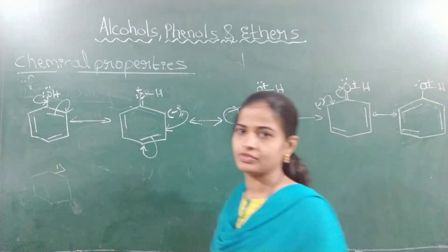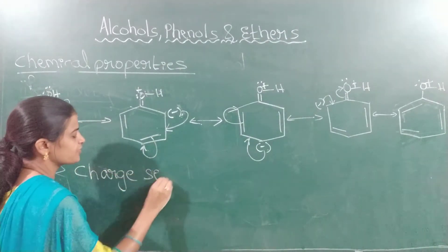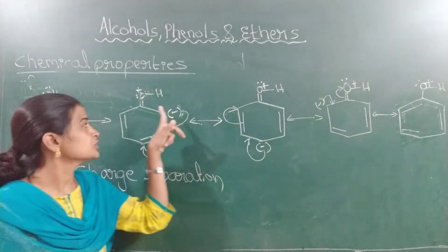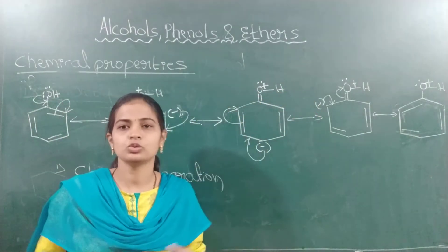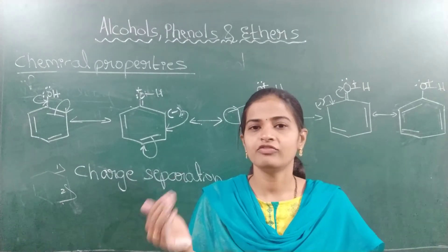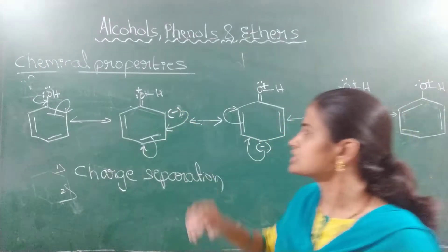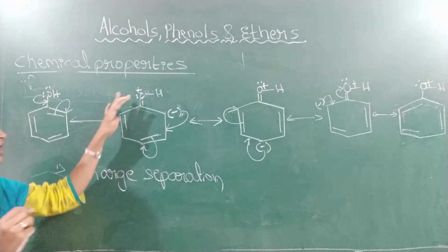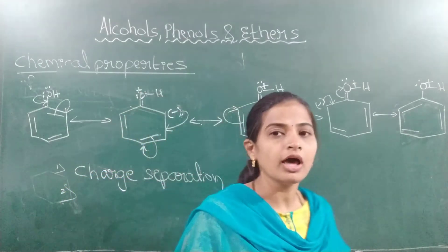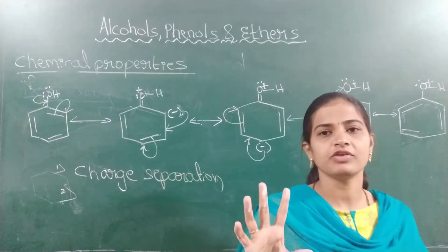There is charge separation in the resonance structures of phenol. Also, the most electronegative oxygen atom is bearing the positive charge. This will destabilize phenol — its stability decreases. It is not so stable because the most electronegative oxygen atom carries positive charge, and positive and negative charges are separated. Because of these two reasons, the phenol is less stable.